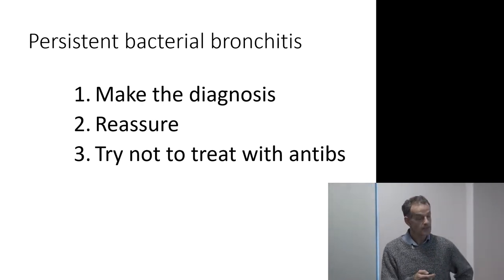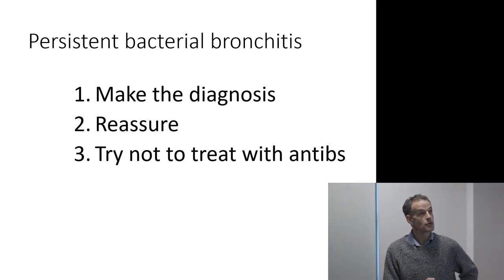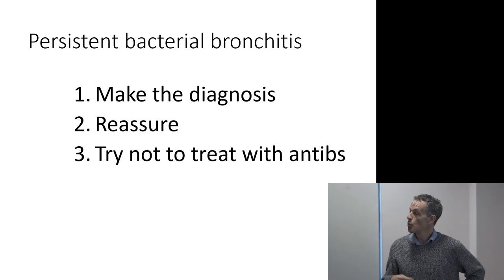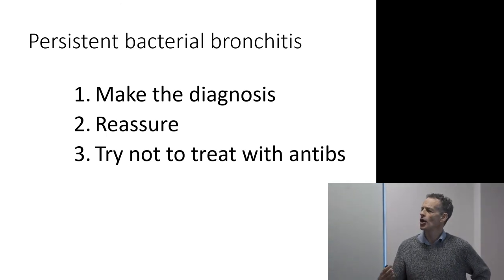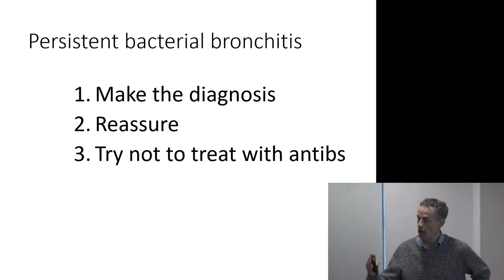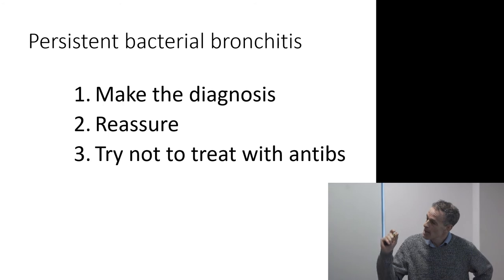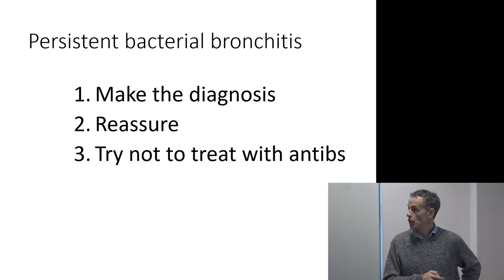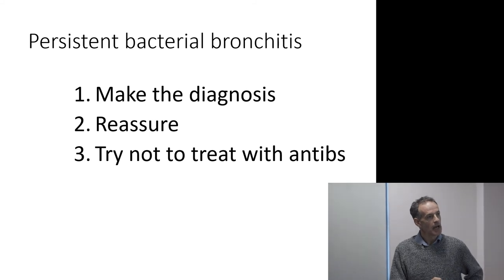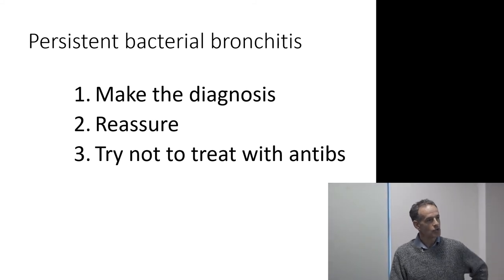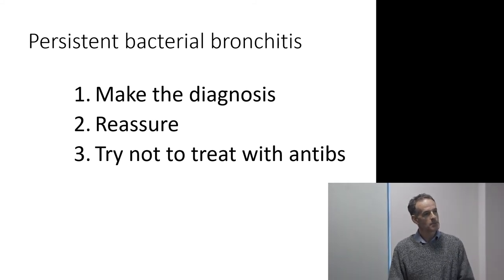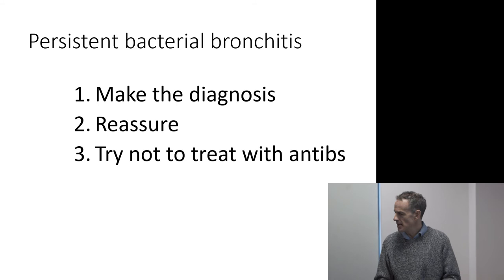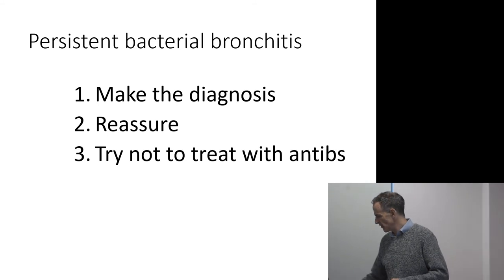The one, two, three about persistent bacterial bronchitis: first, make the diagnosis — it's this wet rattly cough that goes on and on, but characterised by relapse and remission. Second, reassure mum, dad, or granny. And third, try not to treat with antibiotics, because your risk of harm is much greater than your risk of benefit.